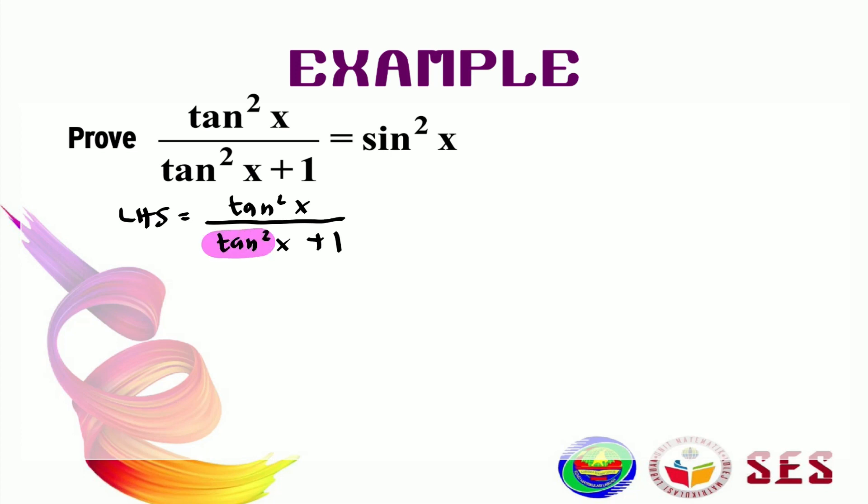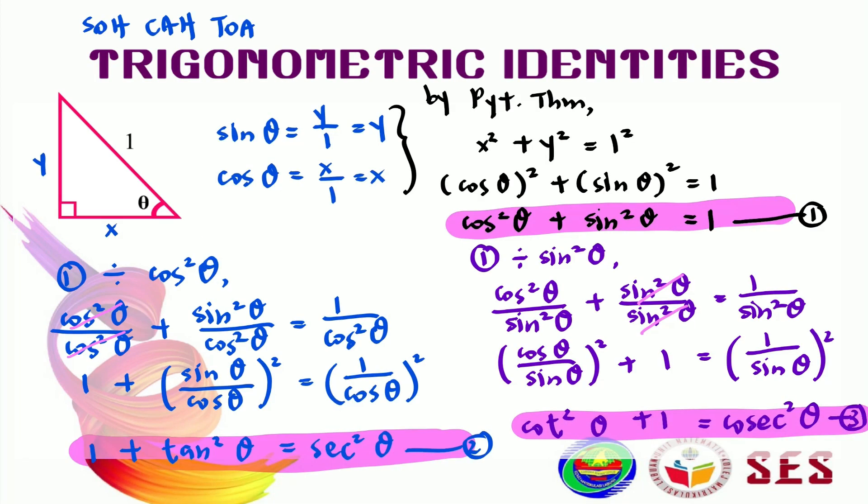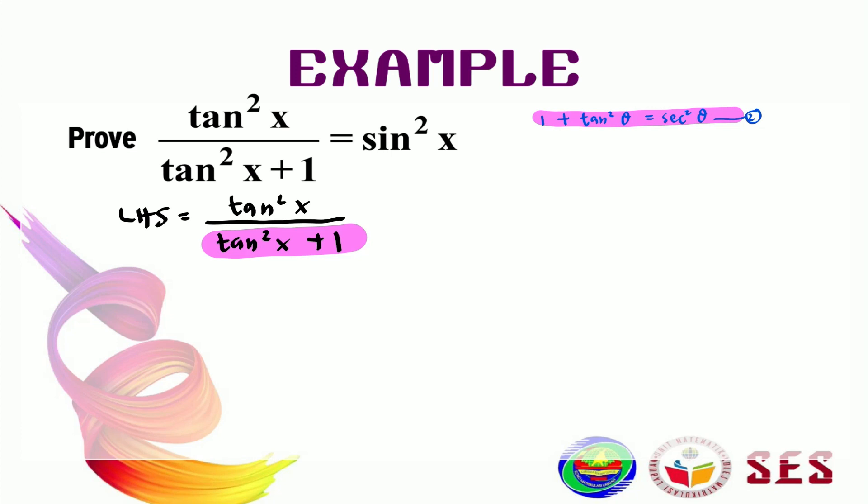If you notice, this is one of our identities. Is it number 1, number 2 or number 3? Yep, this is our second identity here. So, we can change this one straight away to become over secant squared x.